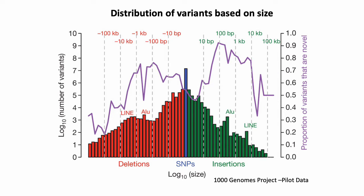Even though one reason for the historical focus on SNPs and SNVs is that they are the most prevalent kind of genetic variant in the human genome, it's worth noting that there are a large number of variants of larger size. This is a plot of the frequency of variants of different sizes in the human genome as estimated by the 1000 Genomes Project. Even though there's a little peak at SNPs, there are basically a lot of variants of other sizes.